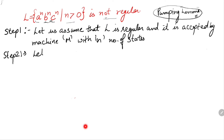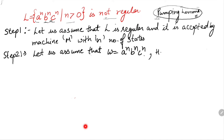Step 2: let us assume that w equals a raised to the power n, b raised to the power n, c raised to the power n. As per the pumping lemma we assume a string w, and we choose the generalized string given in the language. We check that the length of the string should be greater than or equal to the number of states. The length of w equals n plus n plus n, which is 3n, and 3n is greater than the number of states n, so the condition is satisfied.